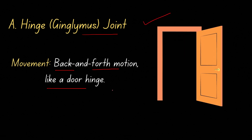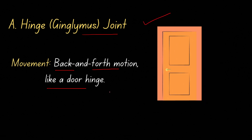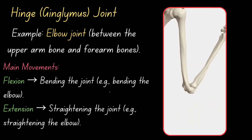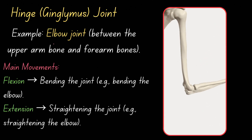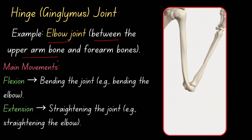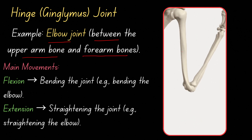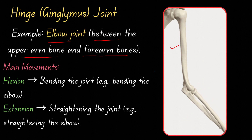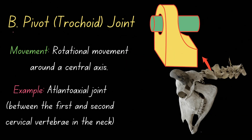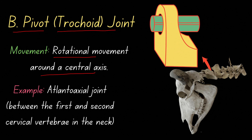The hinge or ginglimus joint produces a back-and-forth motion like a door hinge, as you can see in the animation. An example is the elbow joint, between the upper arm bone (humerus) and the forearm bones (radius and ulna). The main movements are flexion and extension. The pivot or trochoid joint produces rotational movement around a central axis.